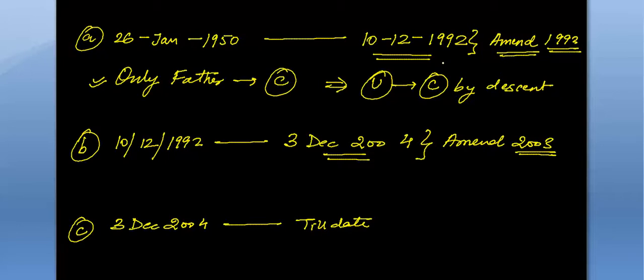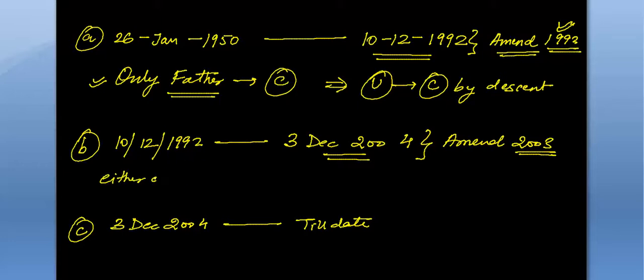The 1992 amendment was brought to give men and women equality. In the earlier provision we were only talking about the father — but what about the mother? The mother is equally responsible for giving you birth. So looking at equality, an amendment was brought in 1992, and with that amendment a provision was added that either of the parents — father or mother — being a citizen would allow you to claim citizenship by descent.